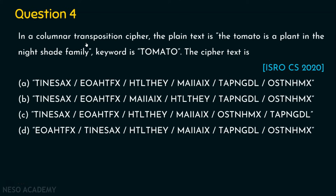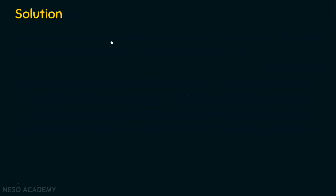In the classical encryption techniques, we have two types: one is the substitution technique and the other is the transposition technique. In the transposition technique, rail fence is one method, and then the row-column transposition. This is the row-column transposition — let's solve it now.